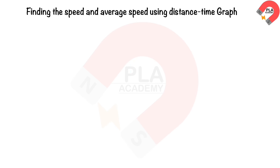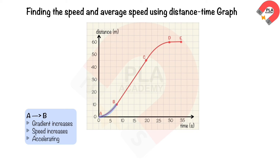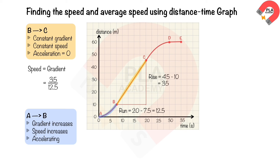Finding speed and average speed from a distance-time graph: between A and B, the gradient is increasing so speed is increasing and the object is accelerating. Between B and C, the gradient is constant, so speed is also constant and acceleration is zero. The constant speed is found from the gradient: change in x = 20 − 7.5 = 12.5, change in y = 45 − 10 = 35. Therefore, speed = 35 / 12.5 = 2.8 m/s.